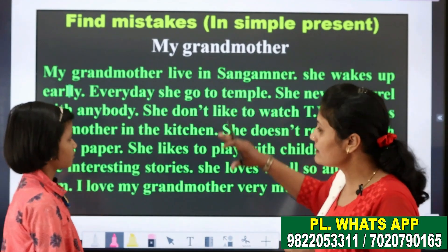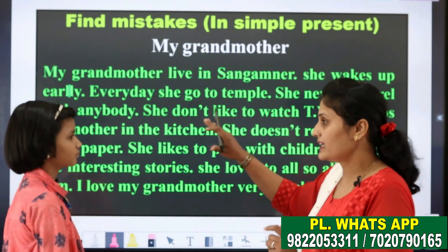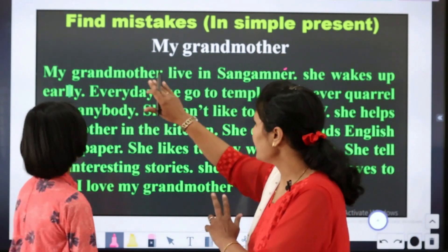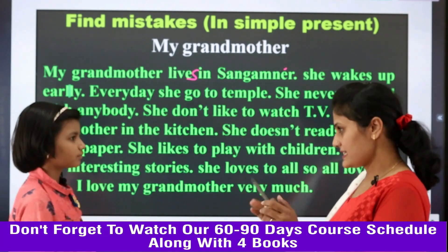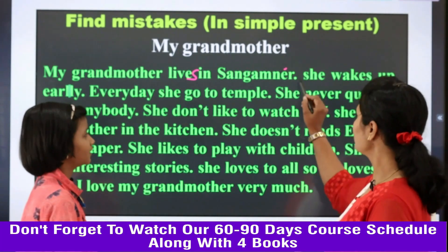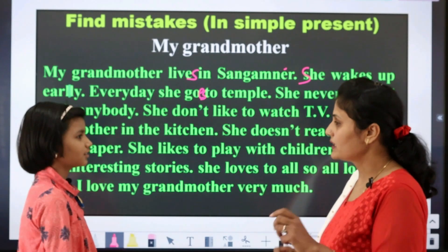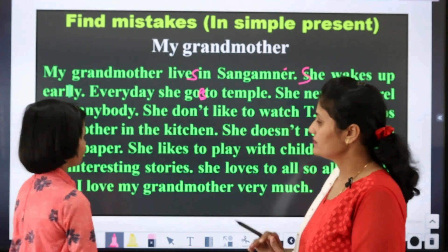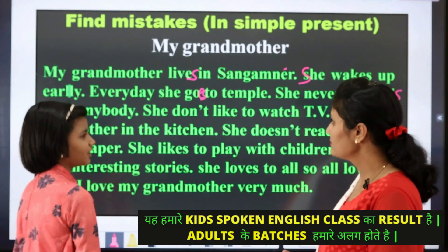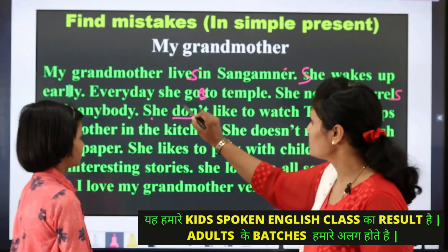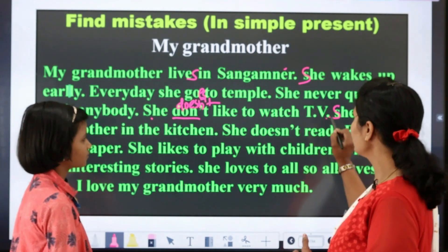You can see this paragraph — there are many mistakes in this sentence, you don't have to tell the mistakes to our audience. Are you ready? Let's start. Today's topic is my grandmother. My grandmother live in Sangamner — my grandmother is singular, so here we need the suffix S: lives. She waked up early — there is S capital after a full stop. Every day she goes to temple — goes, because she is third person singular. She never quarrels with anybody — quarrels because she is third person singular. She don't like to watch TV — doesn't, because she always uses doesn't. She helps my mother in the kitchen — we should have S capital after the full stop. Very good, because after a full stop we always use a capital letter.